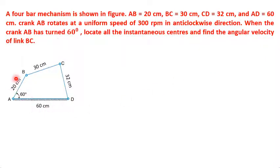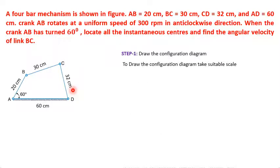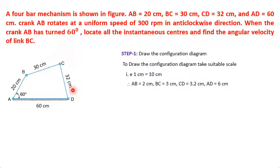The given dimensions are: AD = 60 cm, AB = 20 cm, BC = 30 cm, and CD = 32 cm. The first step is to draw the configuration diagram. For our convenience, we take a scale of 1 cm equals 10 cm, so AB becomes 2 cm, BC becomes 3 cm, CD becomes 3.2 cm, and AD becomes 6 cm.